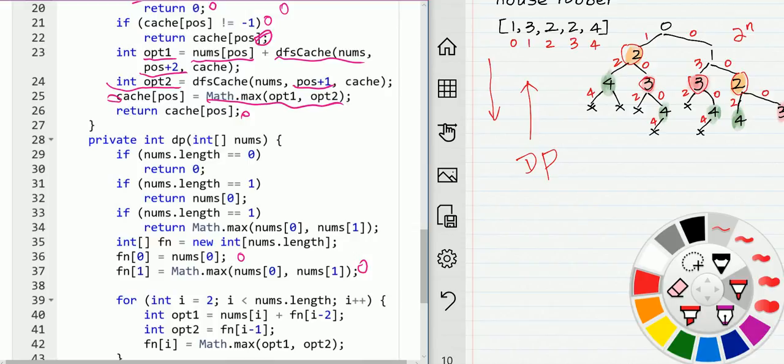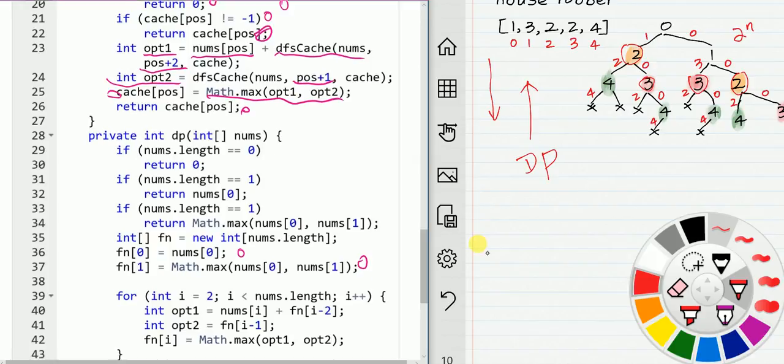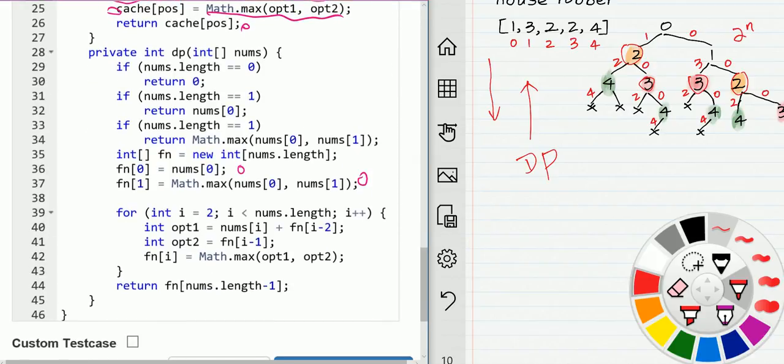So we initialize: if there is only one element in the array, we know the money we can get is that element. Otherwise, if we have two, we return the max of those two.